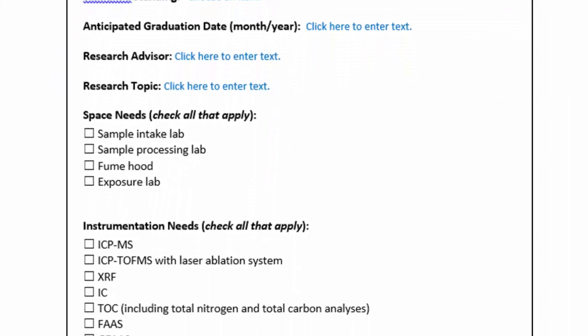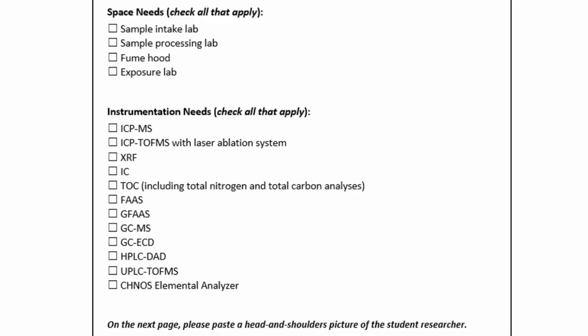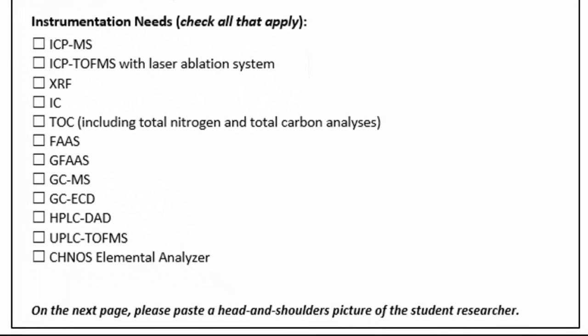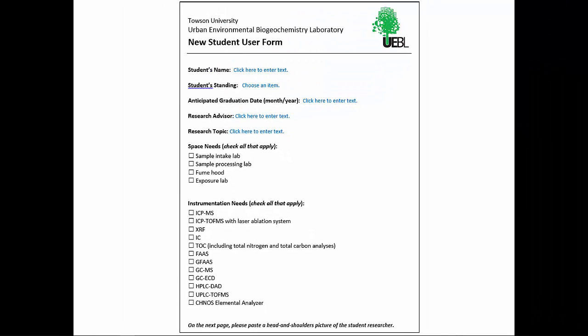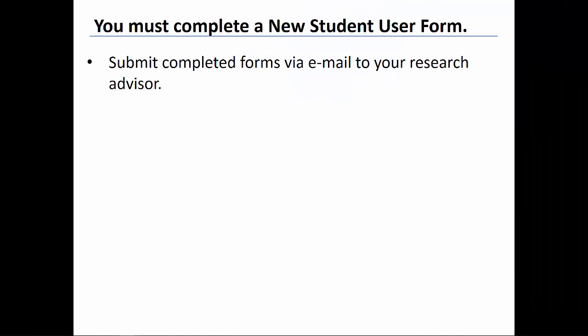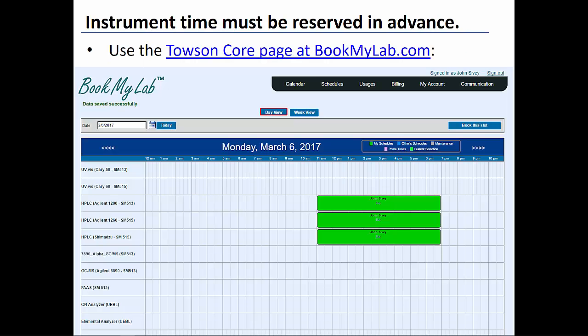If your project requires the use of specific research space within the UEBL, check all the space needs that apply to your project. At the bottom of the form, check all the instruments that you may need in order to complete your project. The focus of this video is on the HPLC instruments with diode array detectors. On the second page of the form, please paste a head and shoulders picture of yourself. Completed forms should be submitted via email to your research advisor.